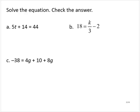Solve the equation. Check the answer. 5t plus 14 is equal to 44. We first identify the variable term. In this case, it's 5t.